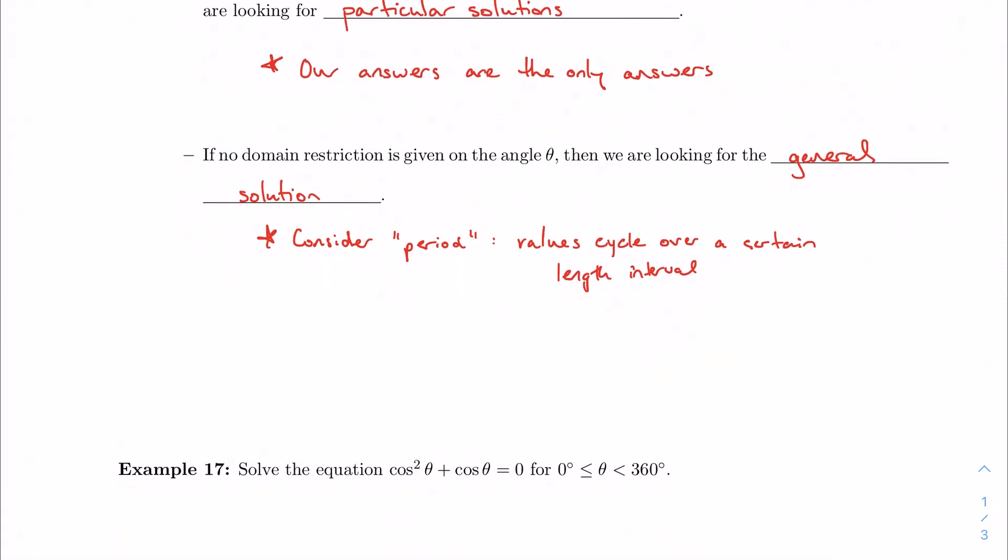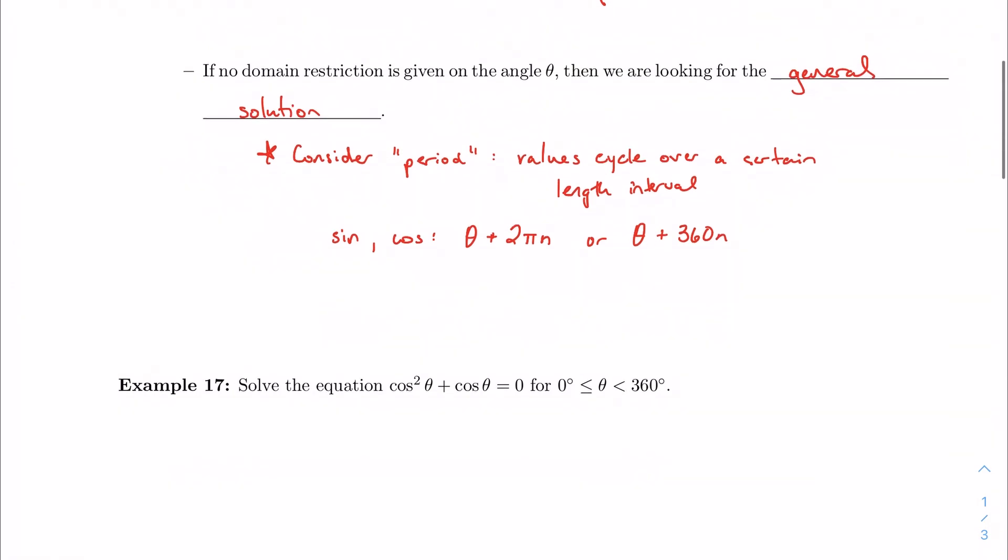So what this means functionally, and all you need to know about right now, is that for sine and cosine, the values repeat every 2π radians or 360 degrees. So in addition to whatever our answer is, we also have to add on 2πn if we're talking about radians or 360n if we're talking about degrees.